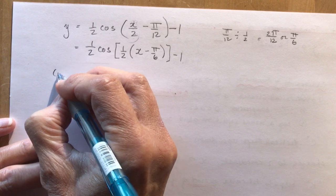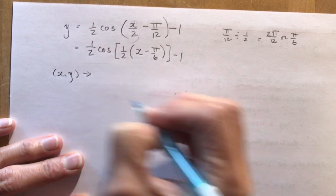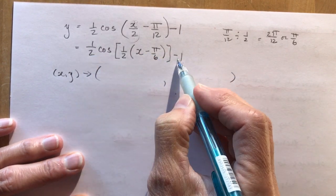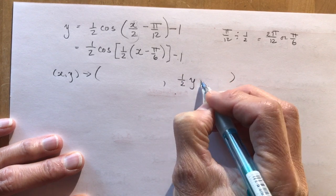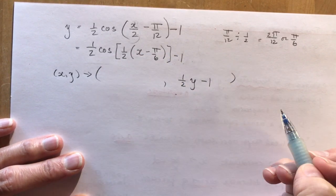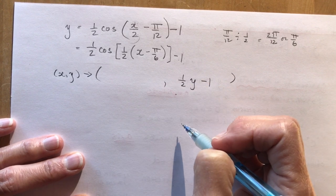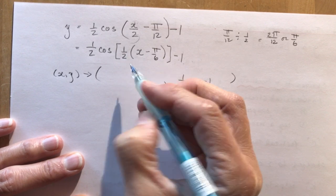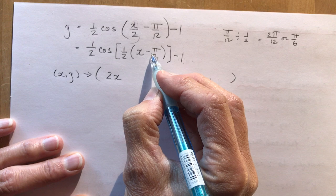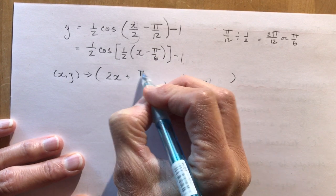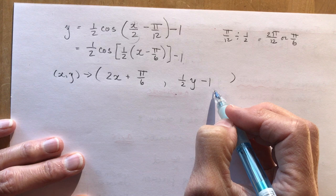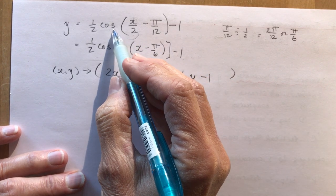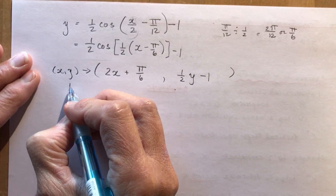Now I'll state the mapping rule. For y: y goes to ½y − 1 — very easy, you should never make a mistake with that. For x: we're dividing by ½, which means multiplying by 2, so x goes to 2x + π/6 (we change the sign of d). There's our mapping rule to use with the key points of the cosine graph.